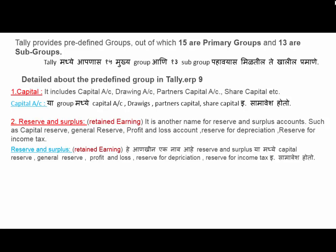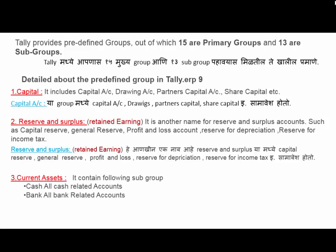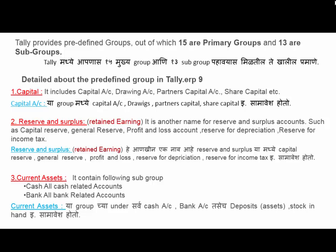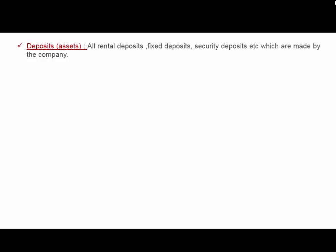Third group is Current Assets. It contains the following subgroups. First is Cash — all cash-related accounts and all bank-related accounts. Another subgroup is Deposit Assets, which includes all rental deposits, fixed deposits, security deposits, etc., made by the company.